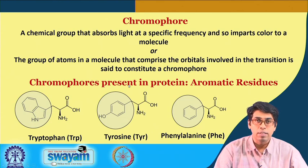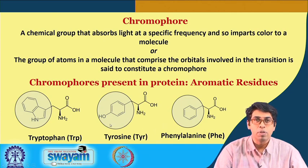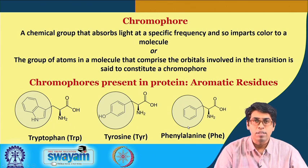In the case of proteins, three amino acids have chromophores that absorb in the UV range: tryptophan, tyrosine, and phenylalanine. They all have aromatic side chains, and it is the side chain that is responsible for absorption in the UV range. The same side chains also give us the fluorescence spectra. Tryptophan gives the maximum intensity, followed by tyrosine, and finally phenylalanine has the least contribution whether in UV absorption or fluorescence.